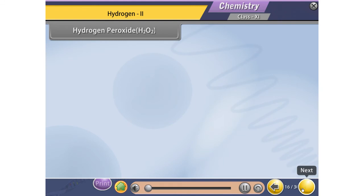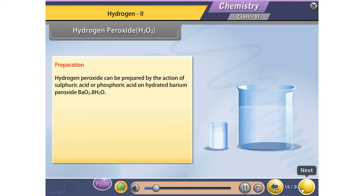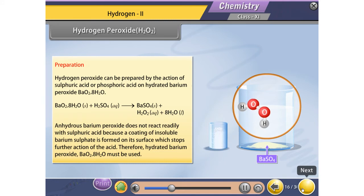Hydrogen peroxide H2O2 preparation: Hydrogen peroxide can be prepared by the action of sulfuric acid or phosphoric acid on hydrated barium peroxide. Anhydrous barium peroxide does not react readily with sulfuric acid because a coating of insoluble barium sulphate is formed on its surface which stops further action of the acid. Therefore, hydrated barium peroxide BaO2·8H2O must be used.